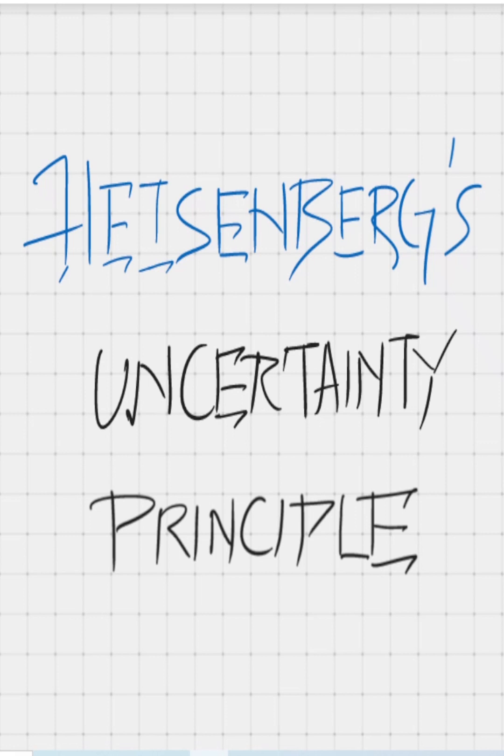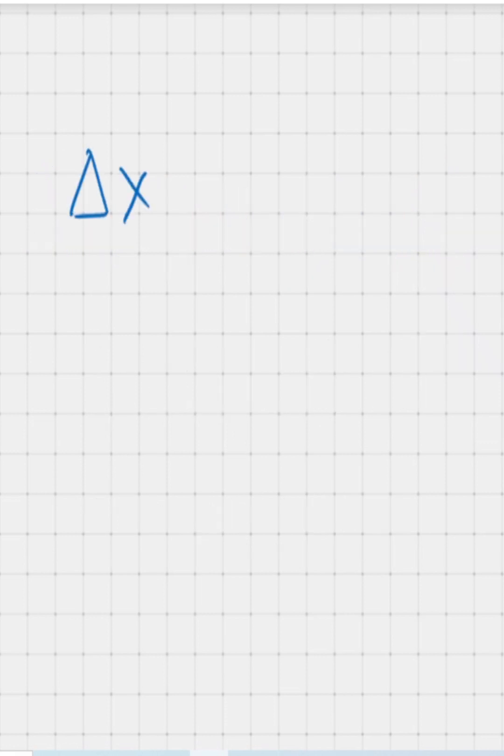Heisenberg's uncertainty principle is given by this equation: delta x into delta p is greater than or equal to h over 4 pi.